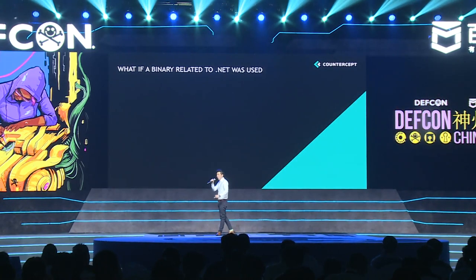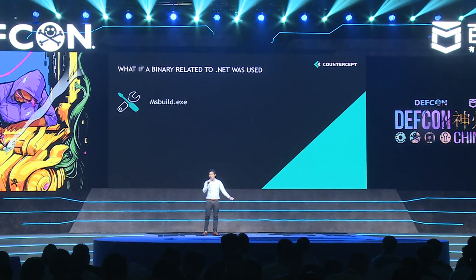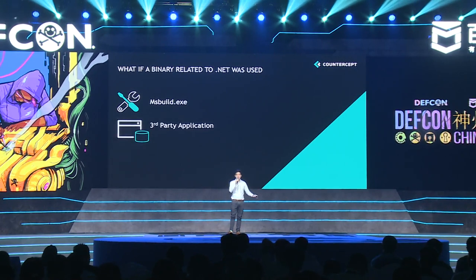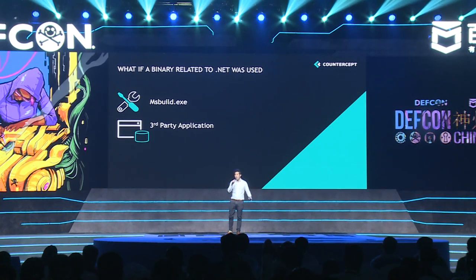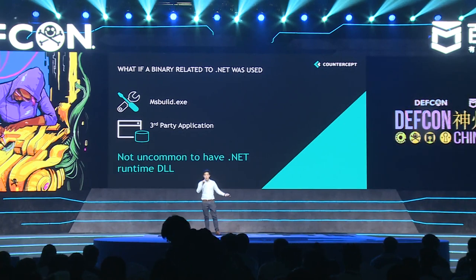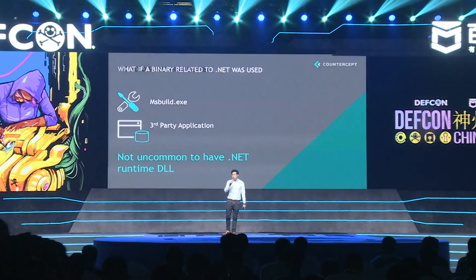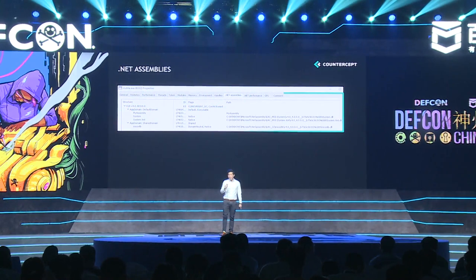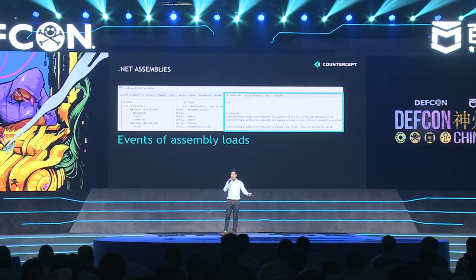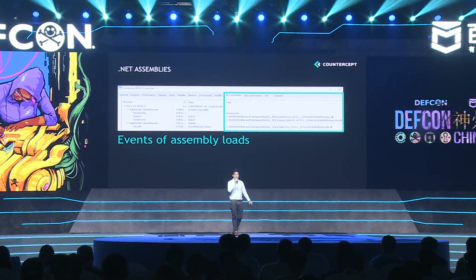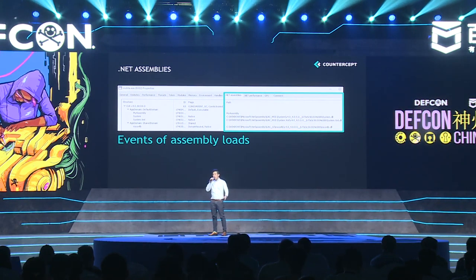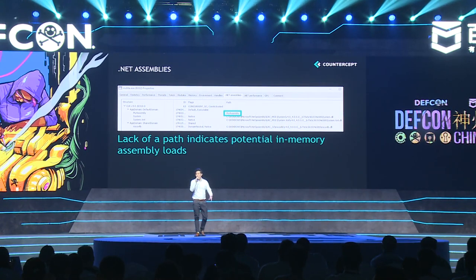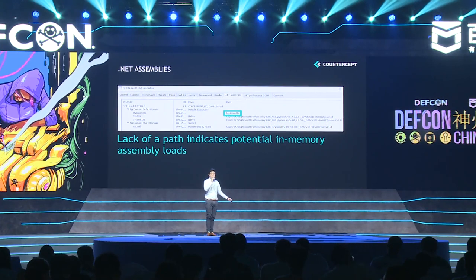However, this hypothesis isn't perfect — what if a binary related to .NET is used, such as MSBuild.exe, which is used to build .NET applications, or a third-party application like SQL Server that allows users to run C# code? For such applications it's not uncommon to have a .NET runtime DLL loaded. We need something better. Fortunately, deep within Process Hacker there is a section that only appears when it detects assembly load events. One assembly load is shown without a path, unlike the other three — lack of a path potentially indicates in-memory assembly loading.